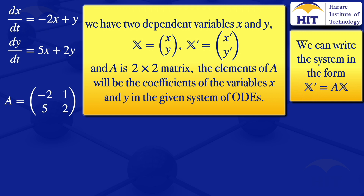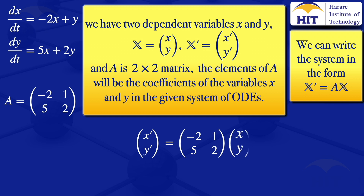We can now write our system of ODEs in matrix form. X prime, Y prime equals the matrix A — minus 2, 1, 5, 2 — multiplied by the column matrix X, Y. That's the matrix form of the given system of ODEs.